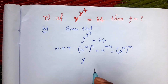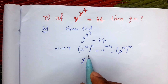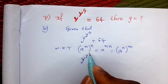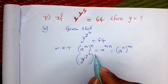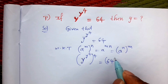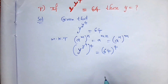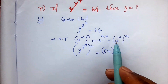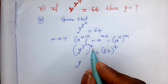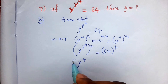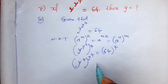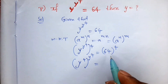Next, we take both sides to the power 4. Then y to the power y to the power 4, all to the power 4, is equal to 64 to the power 4. Applying the formula, this simplifies to y to the power 4, all to the power y to the power 4.